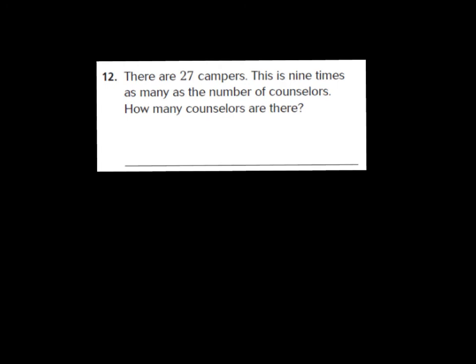Let's look at number 12. It says there are 27 campers. This is nine times as many as the number of counselors. How many counselors are there? We know we have 27 campers, and 'this is' is our equal sign — nine times the number of counselors. We don't know what that is yet. All I have to do is think: nine times something is 27. I know you know your multiplication facts, and you know that three times nine is 27. So three is our answer — that's how many counselors there are.